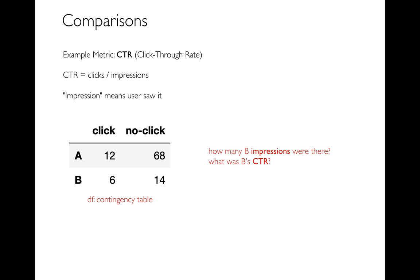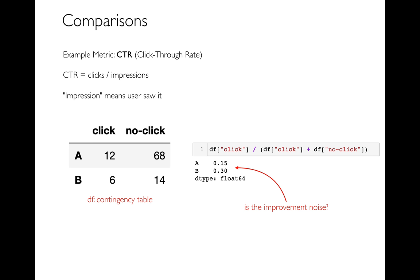In this example, 20% of total users saw version B. With 100 total impressions, there were 20 B impressions (6 clicks + 14 no-clicks), giving a 30% click-through rate for B, compared to 15% for A. So version B is doing quite well. But if you're a scientist, you're wondering: is this just noise? Only 20 people saw B — is that enough? If you've taken a stats course, you probably feel you need to do some kind of statistical test to determine if this is a significant result.